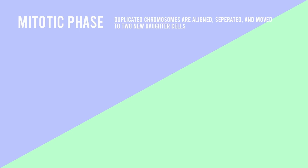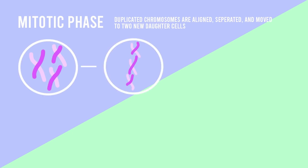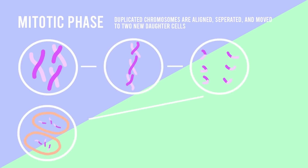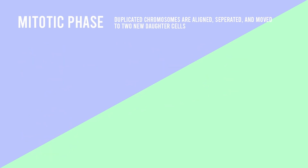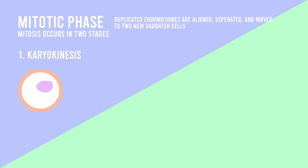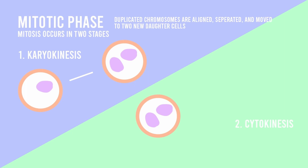Now this leads us to the mitotic phase. The mitotic phase is a multi-step process during which the duplicated chromosomes are aligned, separated, and moved into two new identical daughter cells. Mitosis occurs in two stages. Karyokinesis is the stage where division of the cell nucleus occurs, while the second stage, cytokinesis, is where the cell itself is divided into two daughter cells.